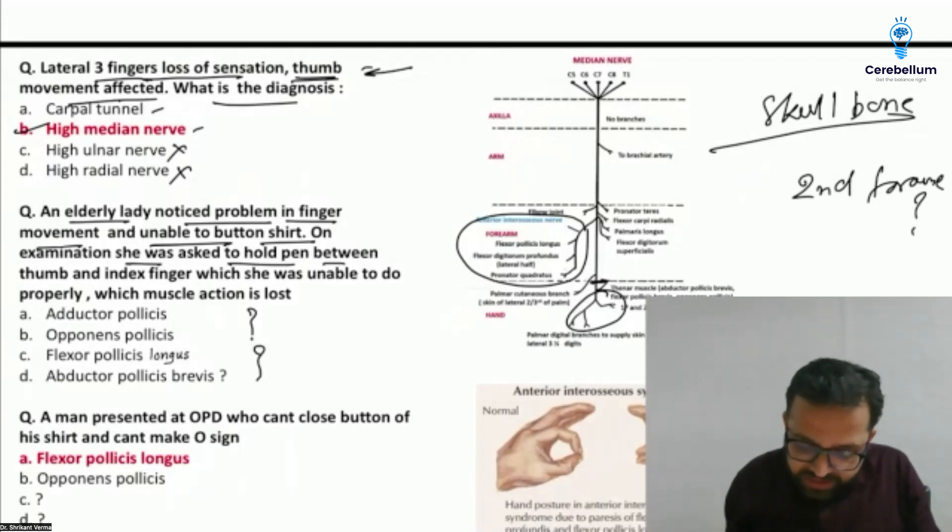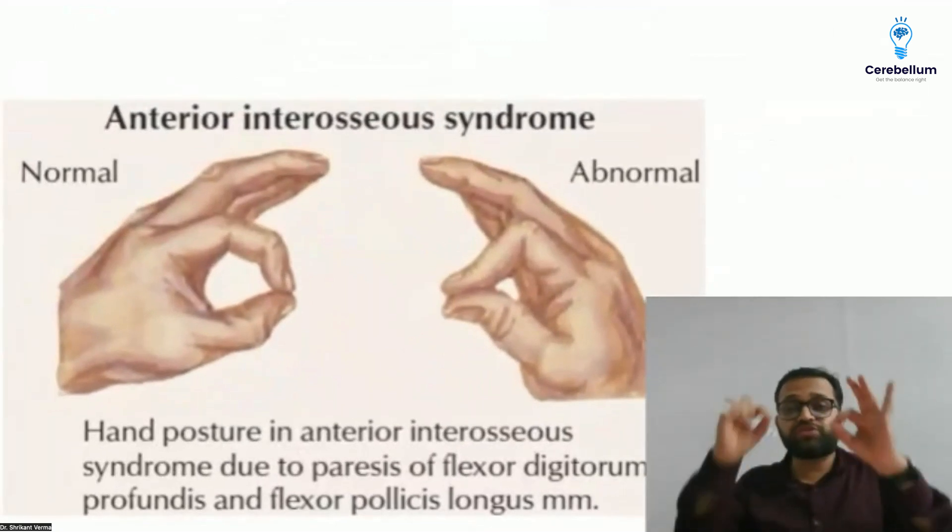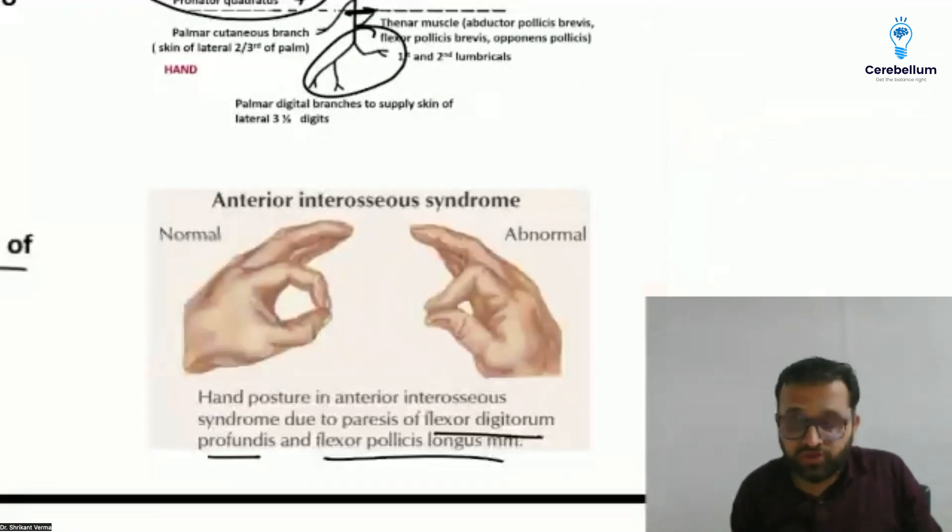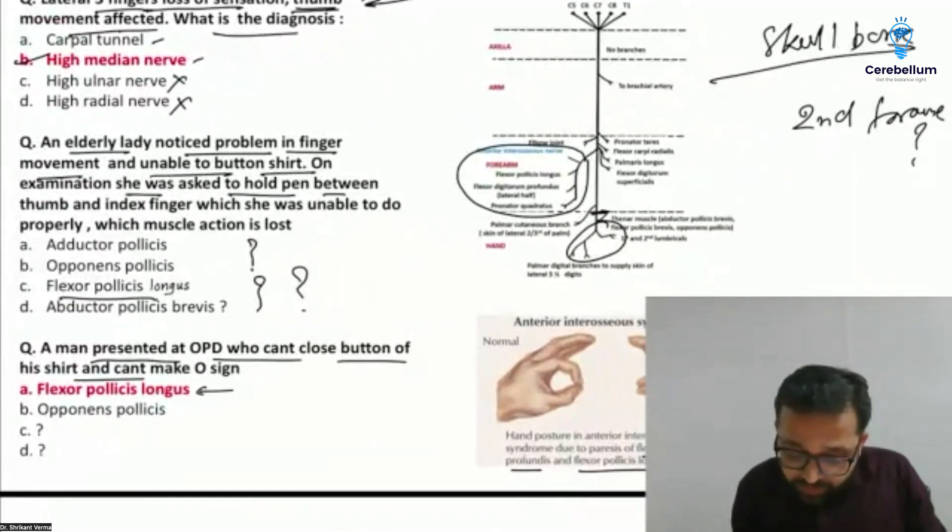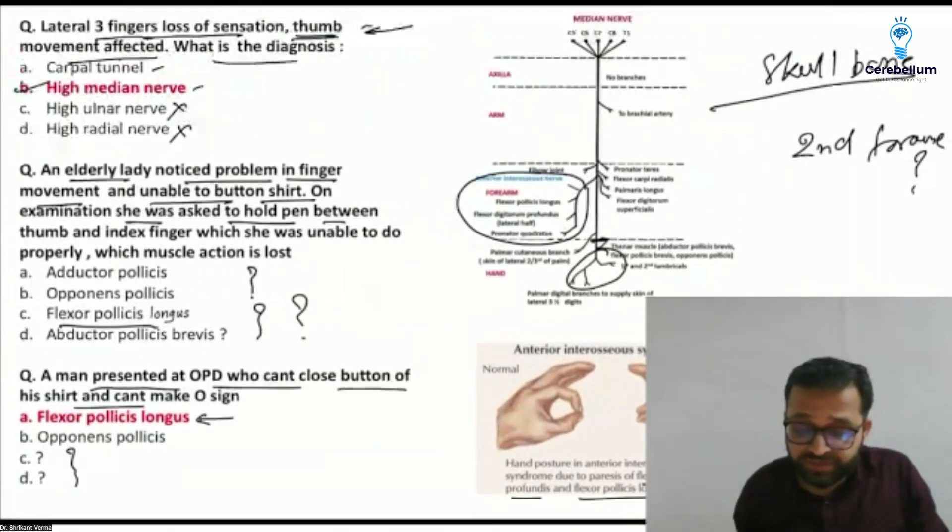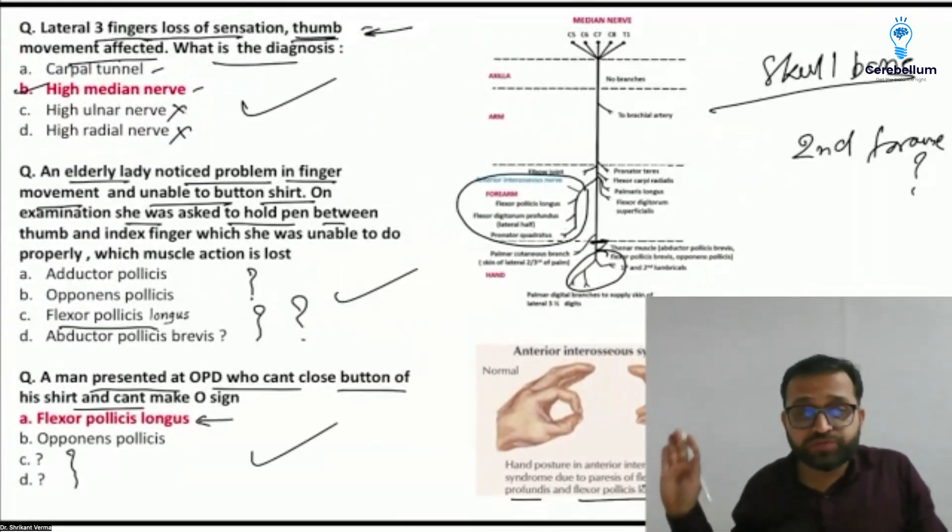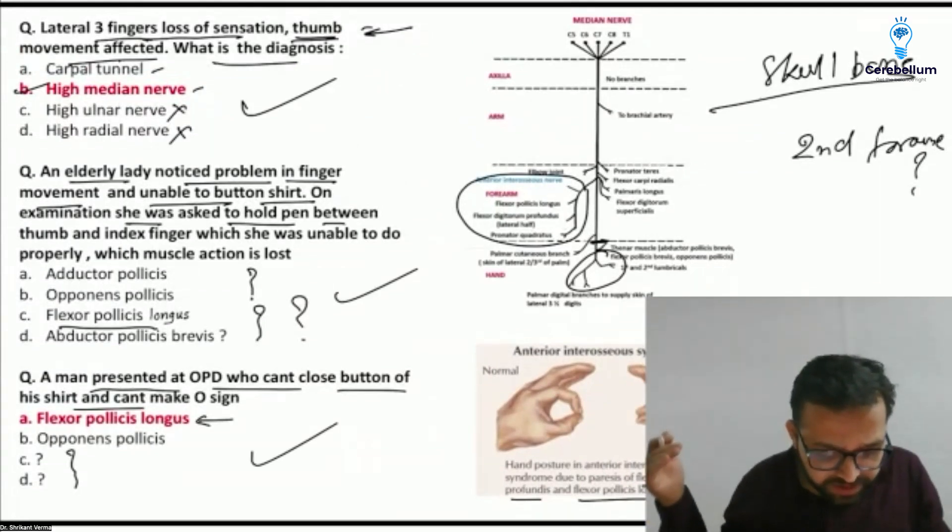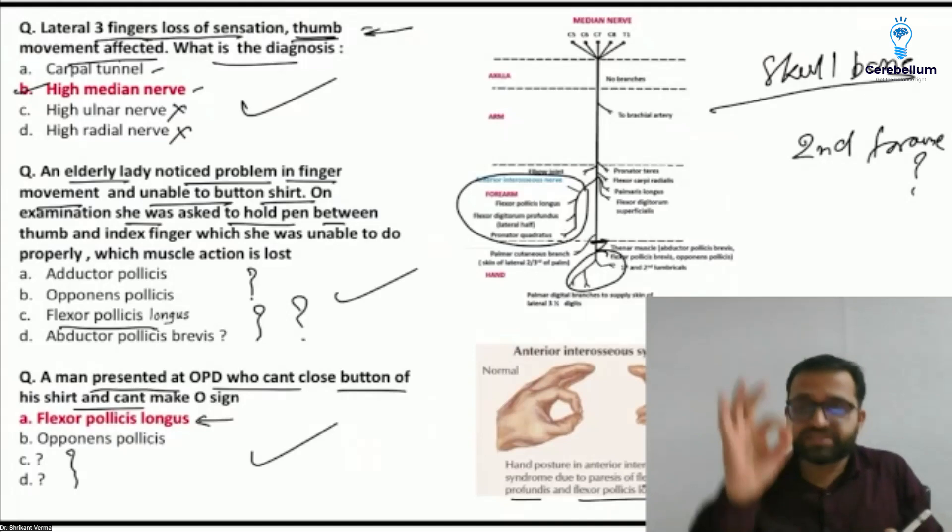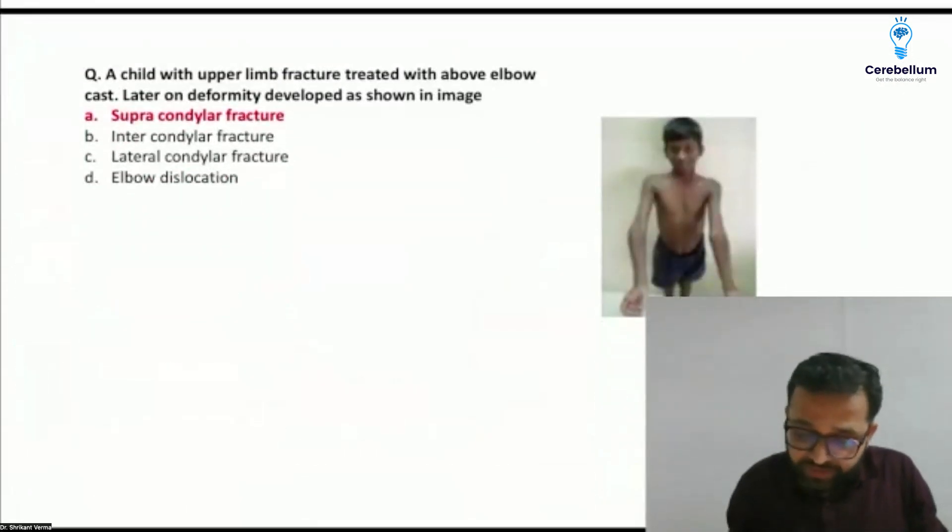According to this, the answer will be the flexor pollicis longus. Next, a man presented at OPD who cannot close the button of his shirt and can't make O sign. This is our anterior interosseous syndrome. The answer is flexor digitorum profundus and flexor pollicis longus. According to the option, I am not able to recall this. I discussed with the students but they all are confusing among these three questions. If flexor pollicis brevis is given, then you can go with the flexor pollicis brevis because it is supplied with the median nerve.